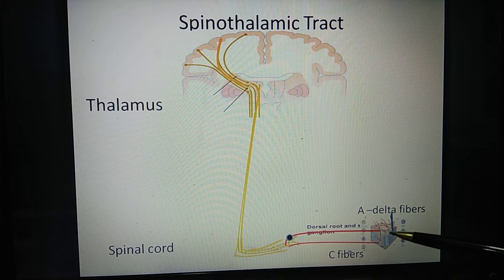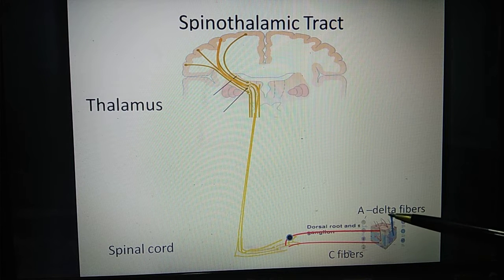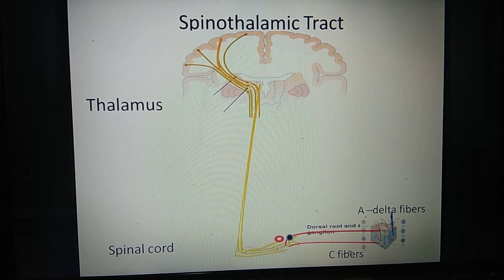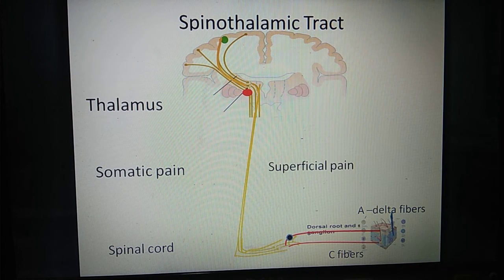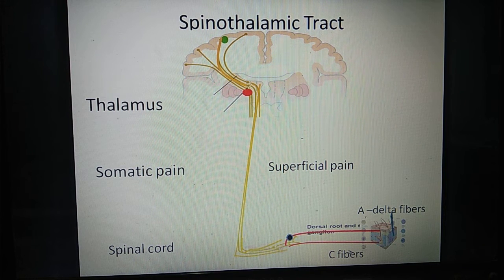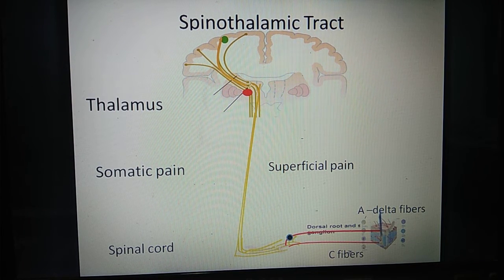Recalling the sensory homunculus, more area is given to parts of the body performing skilled actions, so the superficial part of the skin will have a better area of representation. Therefore, this type of pain which is somatic and arising from a superficial structure is called superficial pain.